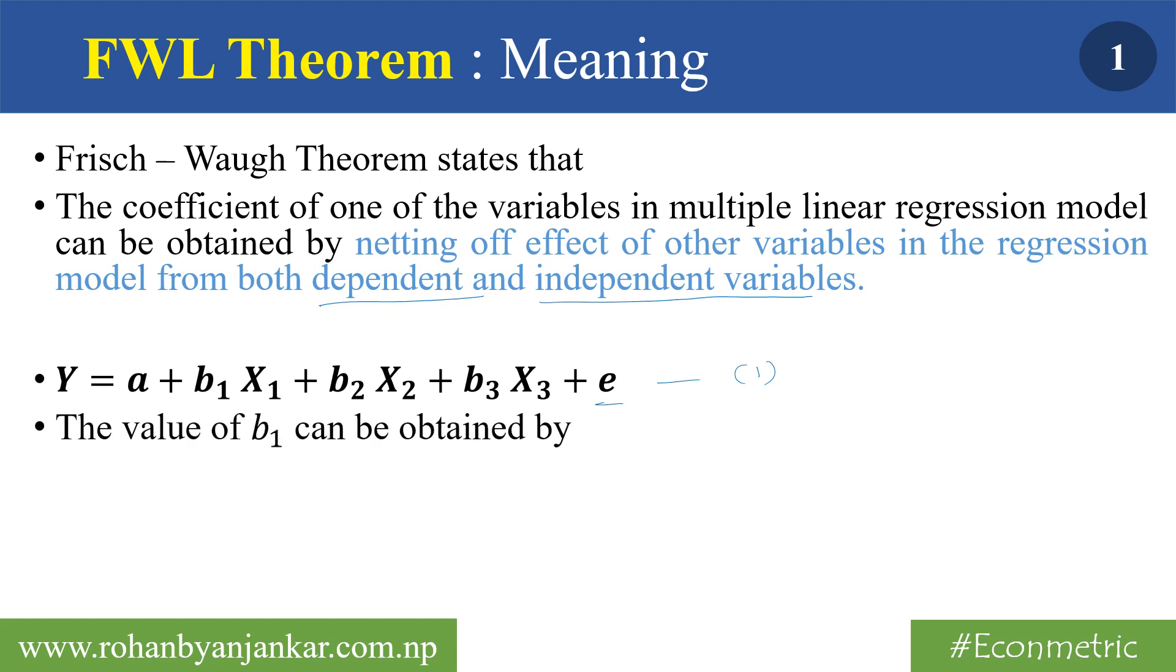the value of beta 1 can be obtained by netting off the effect of X2 and X3 from Y. If we net off the effect of X2 and X3 from Y, or if we remove the effect of these two variables